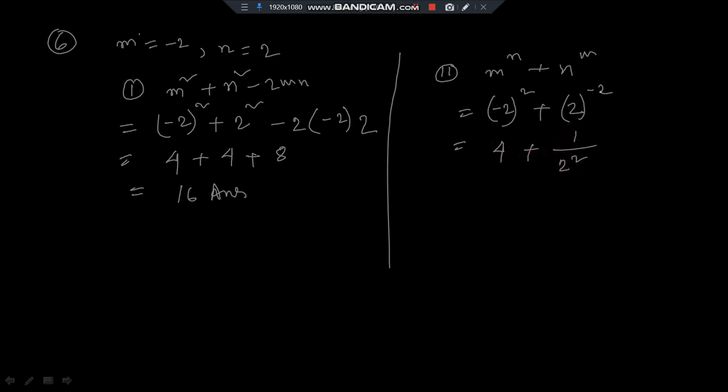Ho gaya kya, minus niche jake plus. So kya ho gaya 4 plus 1 by 2 to 0, 4. So it is coming 4 whole 1 by 4. That is the answer, 4 whole 1 by 4.